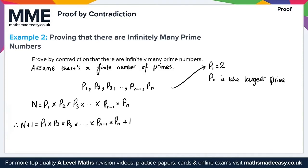If we divide N+1 by Pn, our largest prime, or any other prime Pi, this leaves a remainder of 1. Since no integer divides 1 other than 1 itself, N+1 must either be a prime number itself — which contradicts our assumption that Pn is the largest prime — or it must be divisible by another prime greater than Pn, also causing a contradiction. This contradicts our original assumption that there's a finite number of primes, and therefore proves by contradiction that there are infinitely many prime numbers.